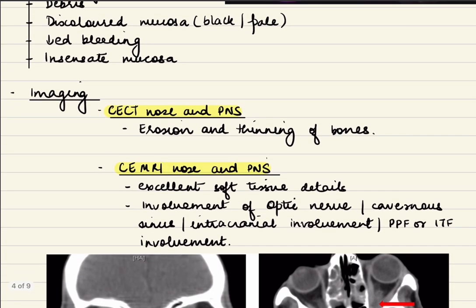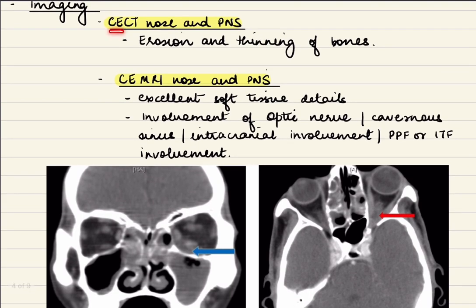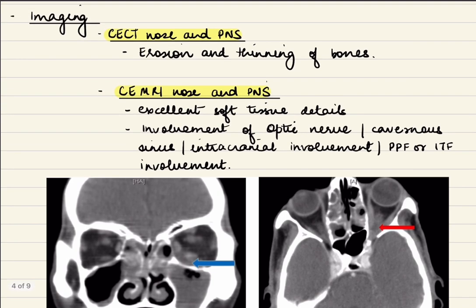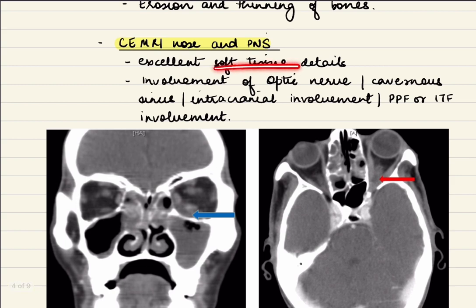Then imaging is very important in mucormycosis. We can do contrast-enhanced CT scan of nose and PNS or contrast-enhanced MRI of nose and PNS. If given a choice, ideally one should have both investigations, but if we have to choose one, contrast-enhanced MRI gives more information than CT scan. CT scan gives excellent bony detail to detect erosion or thinning of bones, but MRI gives excellent soft tissue details.